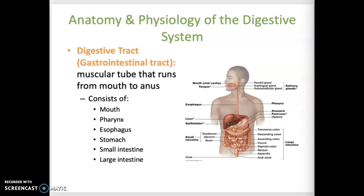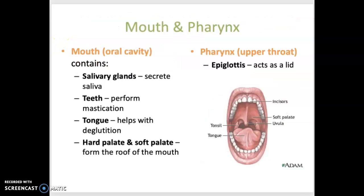We'll go through the parts of the digestive tract starting with the mouth. This is where digestion begins. Within the mouth you have the salivary glands which secrete saliva that contains digestive enzymes to help with the breakdown of food. Also, teeth are found within the mouth. These perform mastication, which means chewing, and this involves the physical breakdown of food.